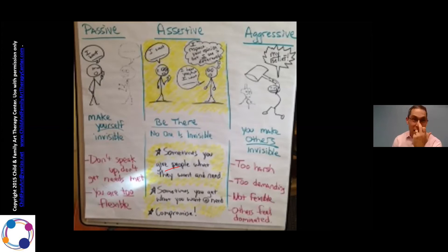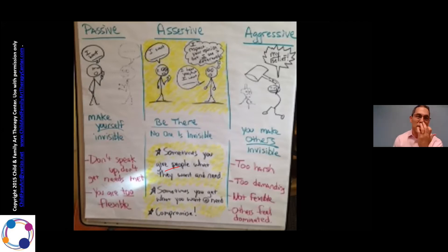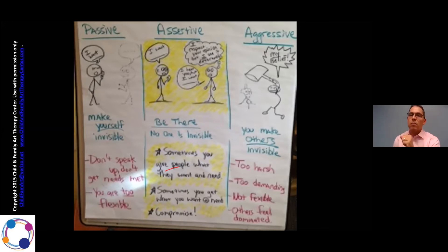If you are on the left — if you're passive — you make yourself invisible. You can see the cartoon: one person who's very solid and very present says 'I want,' but you are practically invisible. There's a person shown in a dotted line, and you don't even see their words. If you don't stick up for yourself, you're passive and you make yourself invisible. Nobody knows what you want.